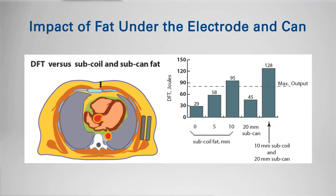Another factor examined was whether fat intervened under the coil, since most patients have some degree of fat over the ribs and pectoral fascia. Five millimeters of fat under the coil increased defibrillation threshold substantially, though likely still within the device's range. Ten millimeters of fat increased it quite substantially, perhaps out of range of what the device can defibrillate. Fat under the can also had impact, but to a smaller degree — even 20 millimeters of fat under the can had only modest impact, still easily within the device's capability.